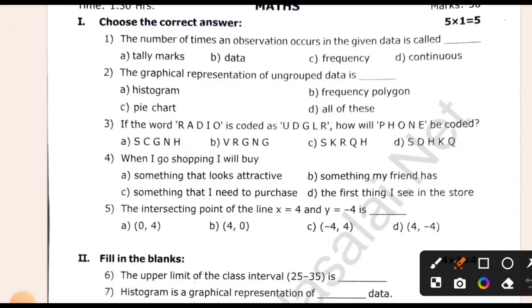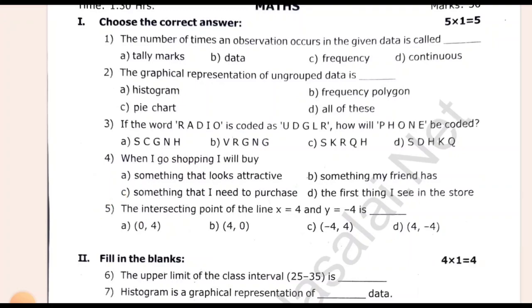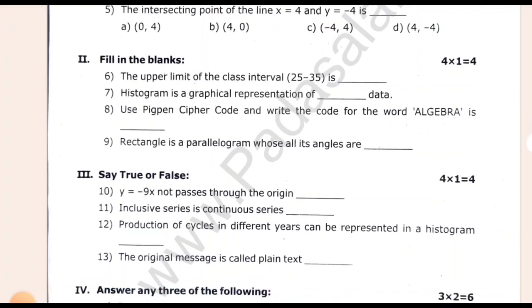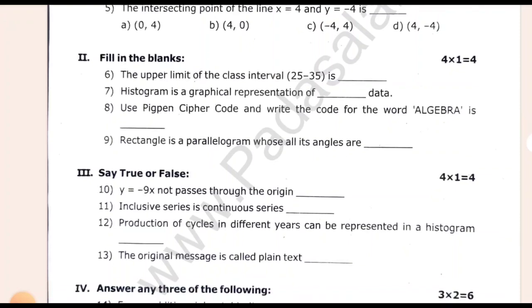The intersecting point of the line x squared equals 4 and y squared equals minus 4 is x = minus 4. So D is the answer. It is simple. I will use the parameters.